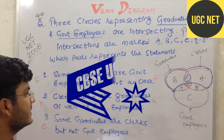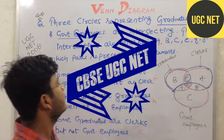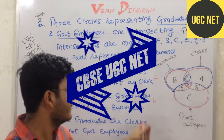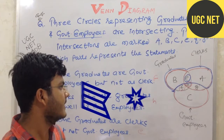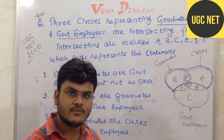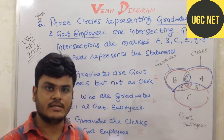This is the basic concept of solving Venn diagrams — by marking the regions and separating each one according to the given statements.